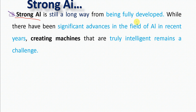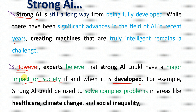While there has been significant advancement in the field of AI in recent years, creating a machine with true general intelligence remains a challenge. However, experts believe that strong AI could have a major impact on society if and when it is developed. For example, strong AI could be used to solve complex problems in areas like healthcare, climate change, and social inequality.